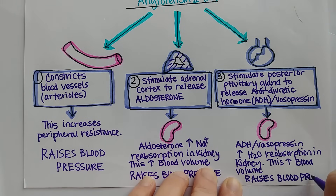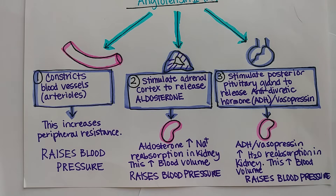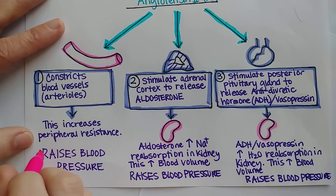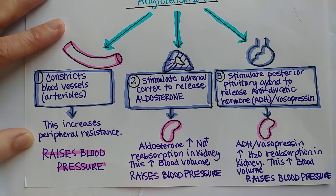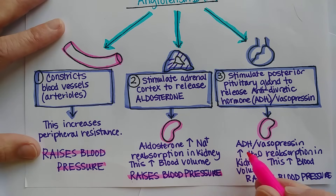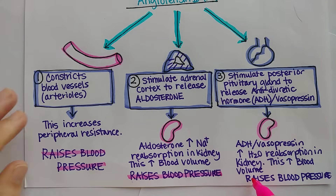So when I told you that the renin-angiotensin-aldosterone system raises blood pressure, it ultimately does it in three ways. One: by constricting arterioles to raise blood pressure. A second way: by causing the kidneys to reabsorb more salt — water follows salt, blood volume goes up, blood pressure goes up. And third: by increasing the release of ADH, which increases water reabsorption in the kidney to increase blood volume and raise blood pressure.